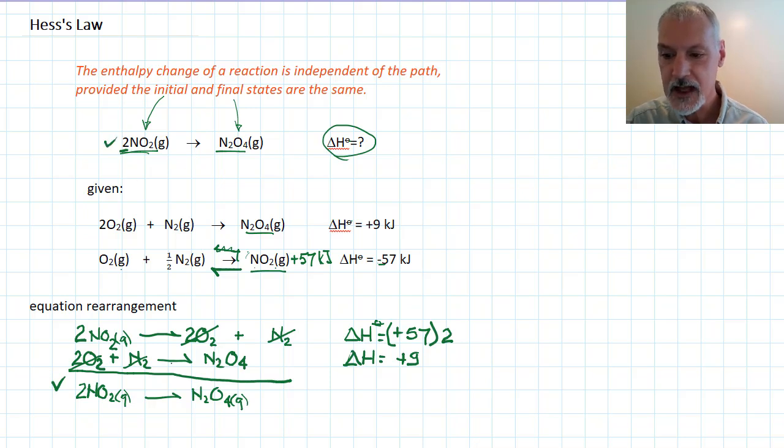So making this reaction happen in two steps, an alternative path is the same as this. Hence, I can add their heats together and I get 123 kilojoules. So that would be the enthalpy change for this reaction.